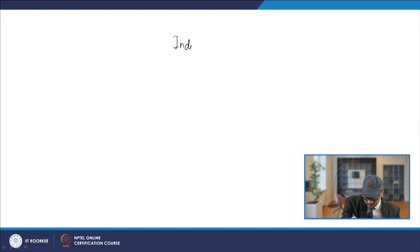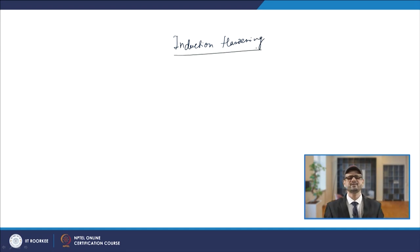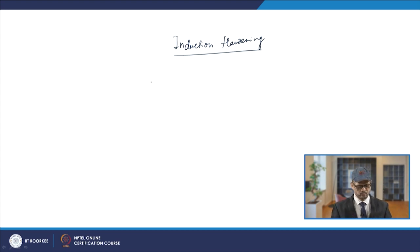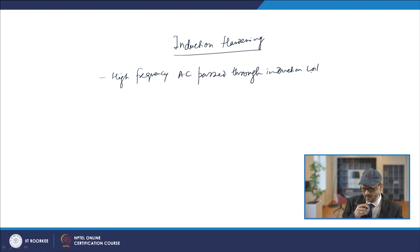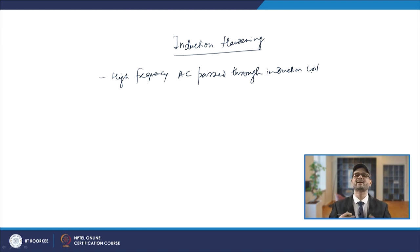For the first category where carbon is more than 0.35%, the first method is induction hardening. In this process, high-frequency alternating current is passed through induction coils enclosing the steel component to be heat treated. The induced EMF generates heat, which heats the sample.